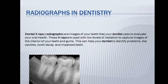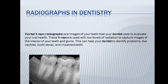Here is a periapical radiograph. It shows us the enamel, dentin, and pulp. The enamel and dentin are considered radiopaque — meaning they appear white or light gray in color. The pulp appears radiolucent, meaning it looks dark gray or black. The root is also radiopaque.